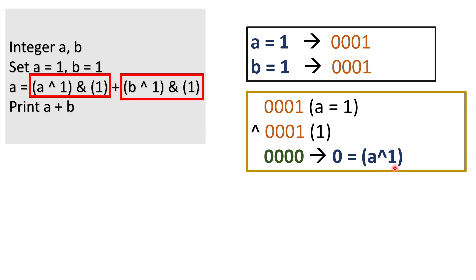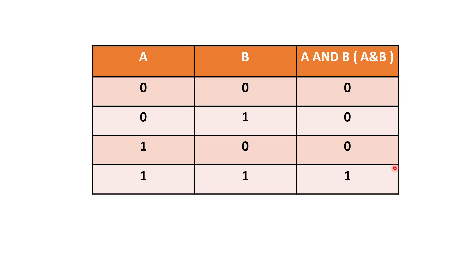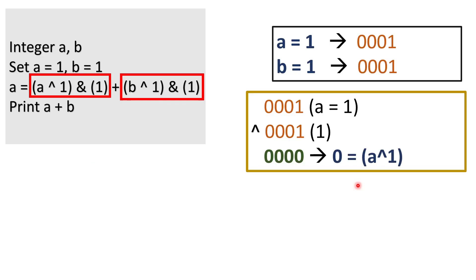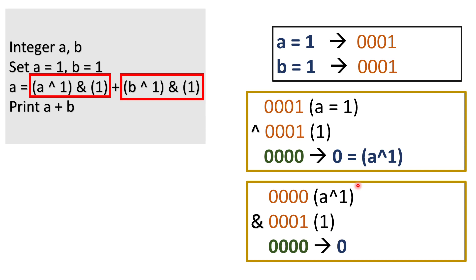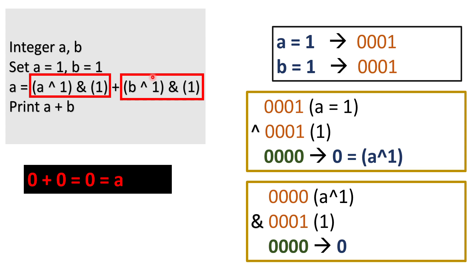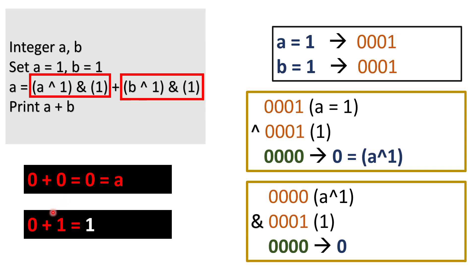Now we have to perform AND operation between this output and 1. This is the table for the AND operation where you will get 0 as output if any one of the input is 0 otherwise the output will be 1. So when we will perform AND operation the output will be again 0. As we know that both the expressions are same so the output will also be same that is 0. So the addition of 0 and 0 will be 0 and it will get assigned to variable a. In last we have to add a and b so the updated value of a is 0 and b is 1. So that's why the output will be 1.